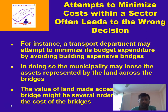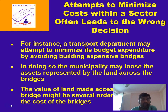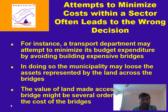The attempt to minimize cost within a sector often leads to the wrong decision. When there is a cost reduction in one sector it might lead to a wrong decision in another sector. For instance, a transport department may attempt to minimize its budget expenditure by avoiding building expensive overpasses. In doing so, the municipality may lose the asset represented by the land across the bridge — the value of the land accessible by the bridge might be several orders of magnitude greater than the cost of the bridge.